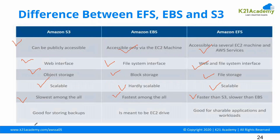Amazon S3 is good for storing backups. Amazon EBS is meant to be used like an easy drive. EFS is good for shareable applications and workloads — since EFS can be connected by multiple servers, it is well-suited for shareable applications and workloads.